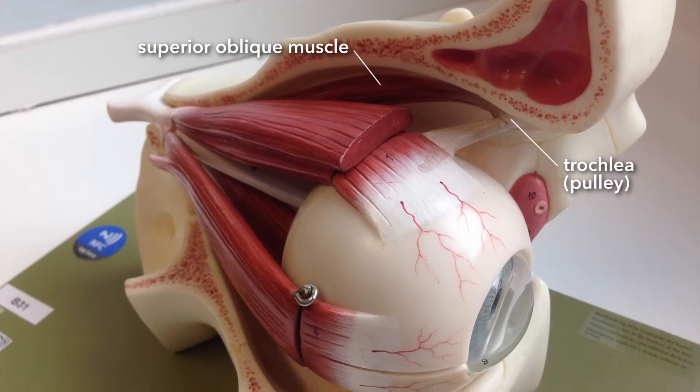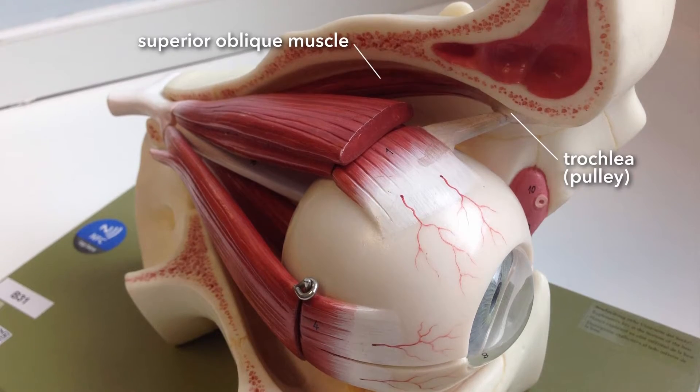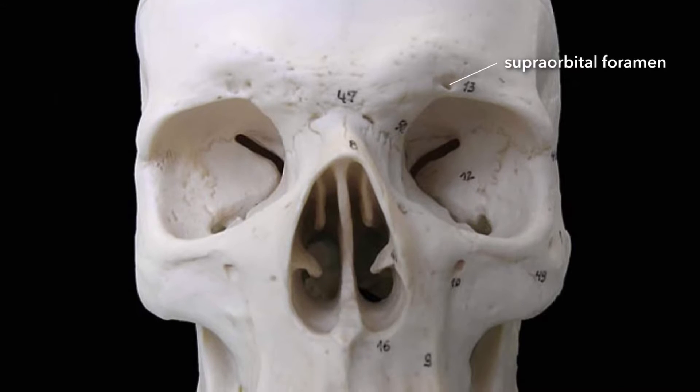The supratrochlear vein and artery are named supratrochlear because the superior oblique muscle runs through a pulley, and the word for pulley is trochlea. So these veins run superior to the trochlea — the pulley of the superior oblique muscle, which is up deeper in there. So supratrochlear is over here, then supraorbital — this is the orbit in here — and the supraorbital vein is draining blood from the scalp up here. It runs through a supraorbital foramen or supraorbital notch to get into the superior part of the orbit.